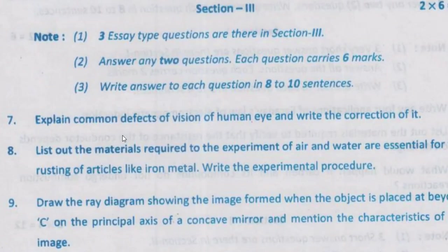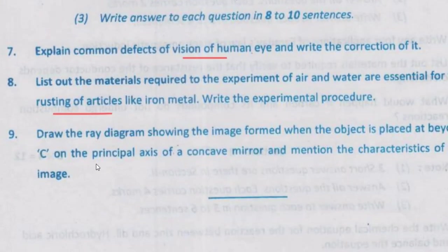Long answers: Explain the common defects of vision in the human eye and write their correction. List the materials required — rusting of iron nails experiment. Draw a ray diagram: object is placed beyond C on the principal axis of a concave mirror.